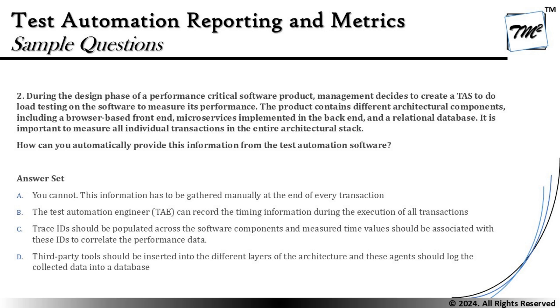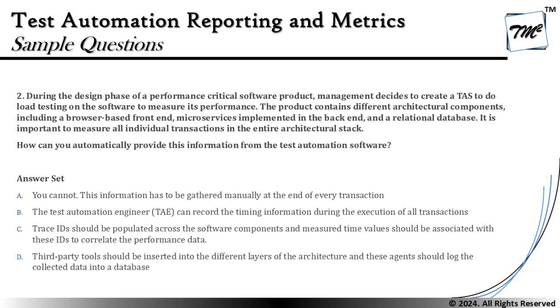Option B says: the test automation engineer can record the timing information during the execution of all transactions. This does not explain how data can be correlated across different components, so it doesn't fully solve the purpose. Option C says: trace IDs should be populated across the software components and measured time values should be associated with these IDs to correlate the performance data. This makes a lot of sense because trace ID is the most appropriate way to associate performance data across different architectural components, enabling system-wide performance analysis.